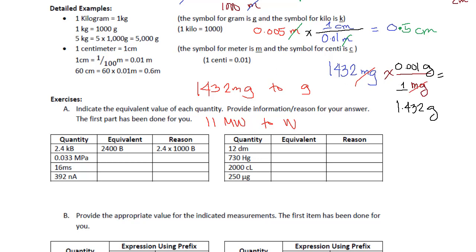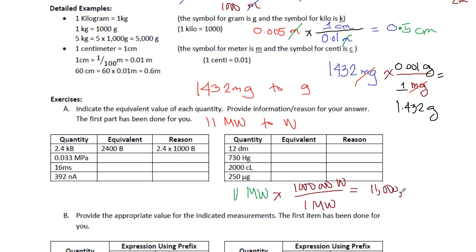Similarly, 11 megawatts converted to watts: mega means 1 million. We put 1 megawatt on the bottom and 1,000,000 watts on top. The megawatts cancel out and the answer is 11 million watts. So, 11 megawatts is equivalent to 11 million watts.